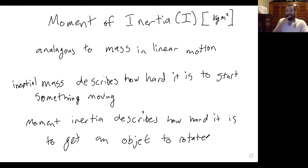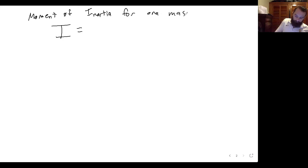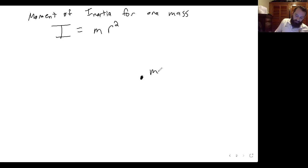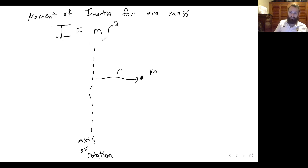A large moment of inertia corresponds to something that is hard to rotate, and a low moment of inertia means something that's easier to rotate. The most basic formula for moment of inertia — for one mass — is I = mr². So if you have some mass m and you want it to rotate about an axis, and it's some radius r away from the axis of rotation, you use this equation to calculate its moment of inertia.